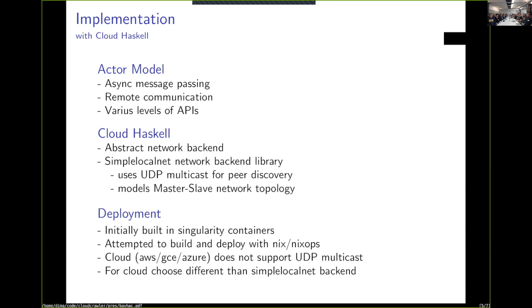Cloud Haskell itself has its network backend is abstracted. Basically, anybody can write any kind of network transfer layer to it. They have a couple available. The one that seems to be recently worked on was Simple LocalNet. That uses UDP multicast for peer discovery. Essentially, it models the Master-Slave network topology. In my case, that fit well with what I was trying to do.